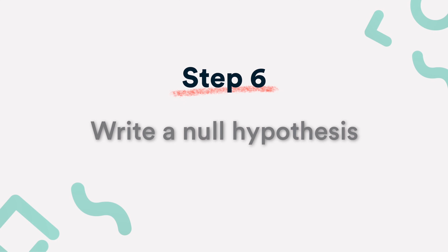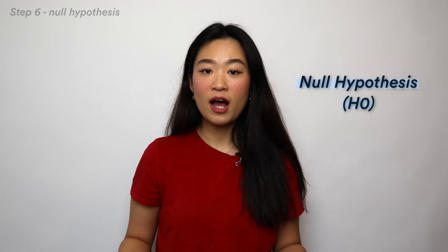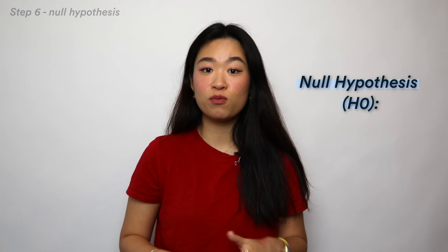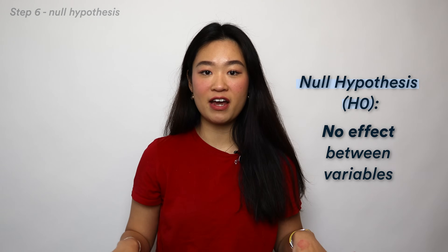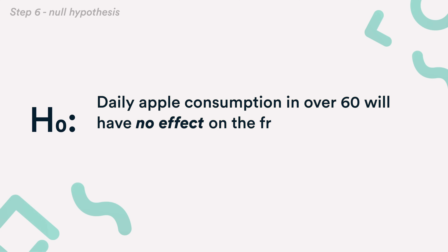Step 6: Write a null hypothesis. Now, if your research involves statistical hypothesis testing, you also need to write a null hypothesis. The null hypothesis assumes there's no effect between the variables. In this case, the null hypothesis is: daily apple consumption in over 60s will have no effect on the frequency of doctor's visits.